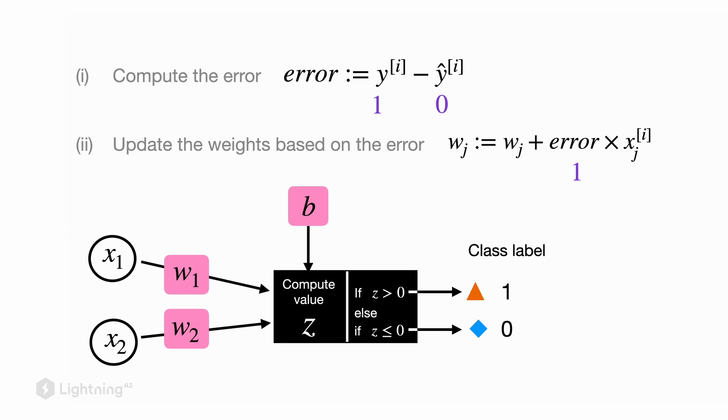If the perceptron outputs zero, that means that the weighted sum was either zero or smaller due to the threshold. What we want though is we want the perceptron to output the one.